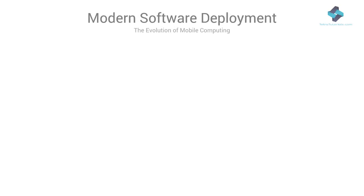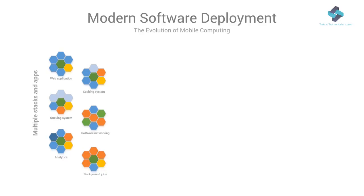To continue our discussion on the evolution of mobile computing over the years, let's review the modern-day scene in software deployment. You can segregate application components into specialized frameworks. Web applications are written in languages like Python, JavaScript, Java, C#, etc. The background workers use Python, Java, Erlang, and so on.